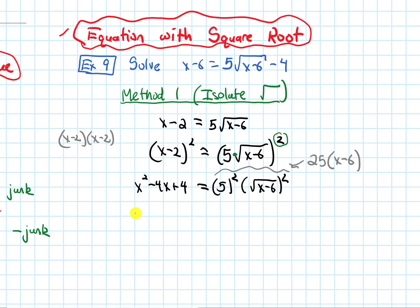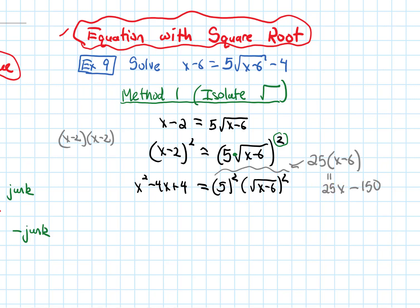So we have x squared minus 4x plus 4 on the left. Let's simplify the right-hand side a bit more first by distributing the 25, giving us 25x minus 150. Now let's move all the terms to one side so the other side equals zero. I get x squared — subtracting 25x gives minus 29x — and adding 150 gives plus 154, equals zero.